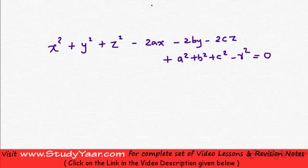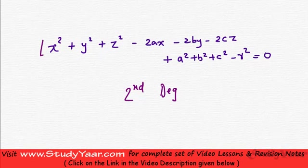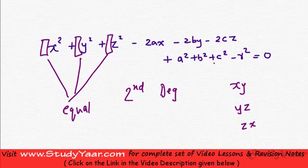Let's analyze this equation. We realize that this is a second degree equation — the maximum degree of any term here is 2. Also, the coefficients of x square, y square and z square are all equal. And one other thing you must understand is you do not have any terms that have xy, yz, or zx.